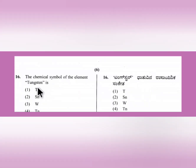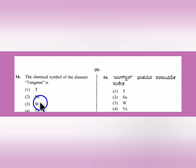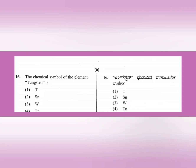Question 16: The chemical symbol of the element tungsten is W. Tungsten's symbol is W - this is general science that you need to learn.